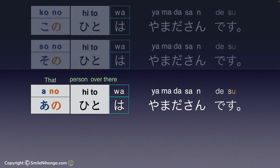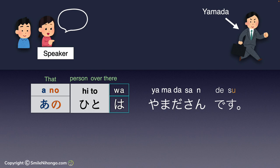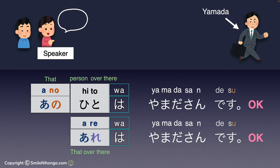But this doesn't apply when the person is far away from you. For instance, when you see your neighbor 山田さん walking in the distance, you can say 'That person over there is 山田さん' — あの人は山田さんです. Or you can also say 'That over there is 山田さん' — あれは山田さんです. I personally don't feel comfortable using あれ for people and usually choose to say あの人, so it also depends on the speaker.